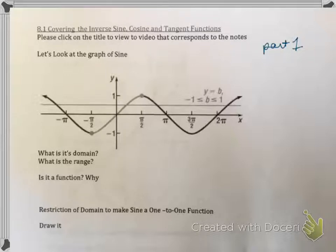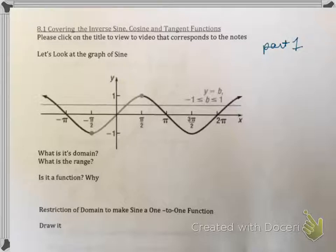So first, let's look at the graph of sine. If we look at the graph of sine, it has some really nice features. For instance, the domain is negative infinity to positive infinity. Remember, domain is your width, and the range goes from negative one to one, and all values in between. Is this a function? It is a function, so the answer is yes. The reason is because it does not flunk the vertical line test, meaning I can put a vertical line anywhere and it only hits my graph once.